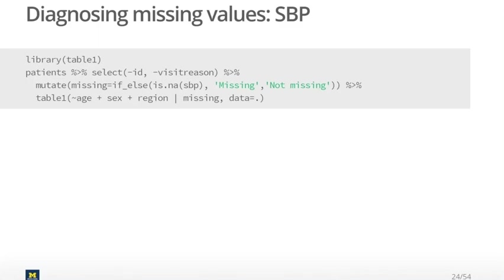I installed the Table1 package and liberated it here. What this code is essentially saying is: start with patients, then select all the columns other than ID and visit reason. Create a new variable called Missing — when the value of systolic blood pressure is missing, name that value 'Missing,' and when the systolic blood pressure value is present, call it 'Not Missing' in this new column. Then we pipe this into Table1.